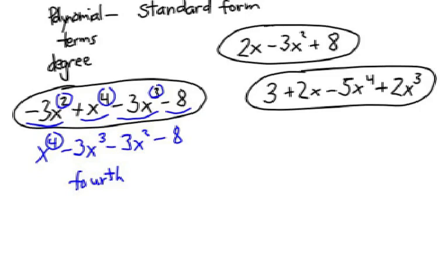On the right, what is the highest power? Yes, x to the 4th. So that term would come first, negative 5x to the 4th, and then what's next? The 2x to the 3rd, and then the 2x, and then the 3. Remember that the 3 here is a constant. The negative 8 here is a constant in the first polynomial. This is also a 4th degree polynomial.